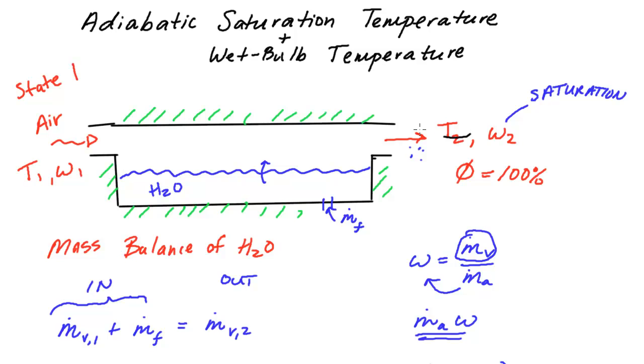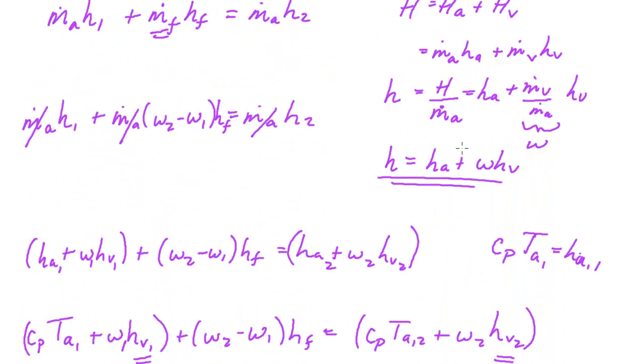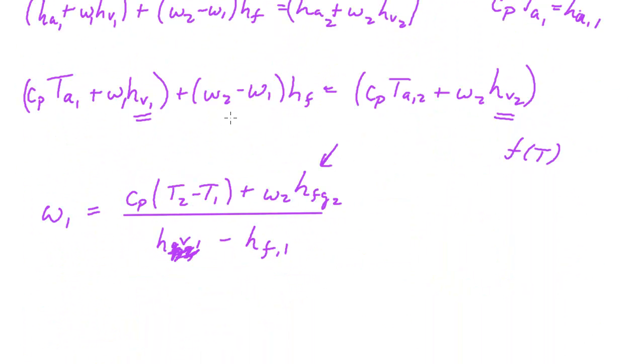We got to the point where we did a mass balance and energy balance and we got to this equation here describing that setup. Then I went ahead and tried to solve for the initial humidity ratio and I did that very quickly. I want to go over that in a little better detail and a little slower with some more time.